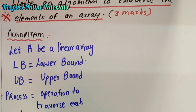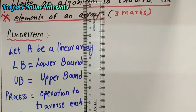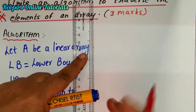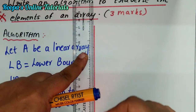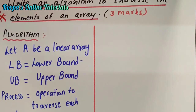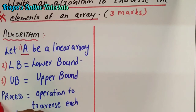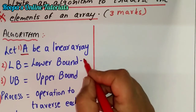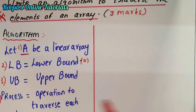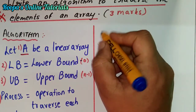It is for three marks and was asked two times. We have an operation to traverse each element of the array, and LOC tells the location of the array element. In the exam, you can write what each variable contains and then start with the steps. We have the linear array, lower bound, upper bound, and process. Remember: upper bound is n minus 1.